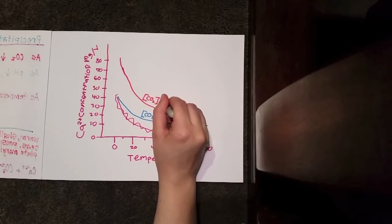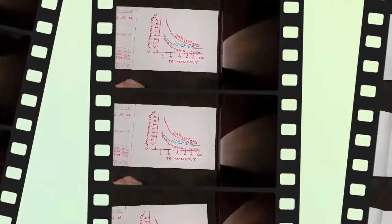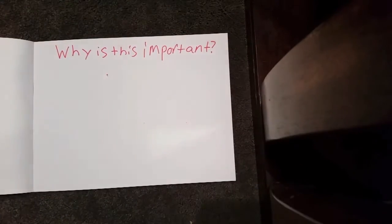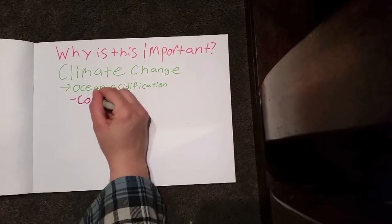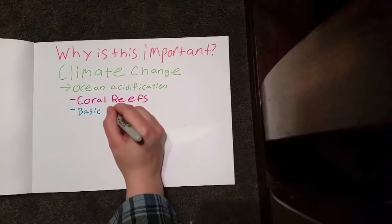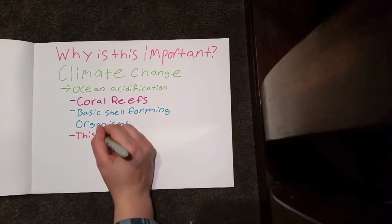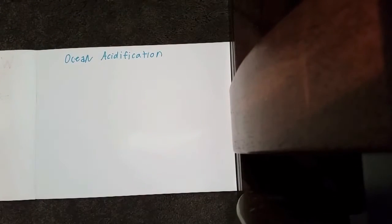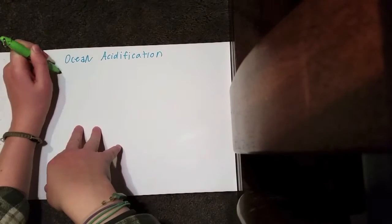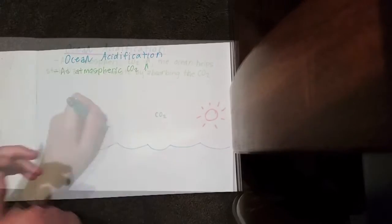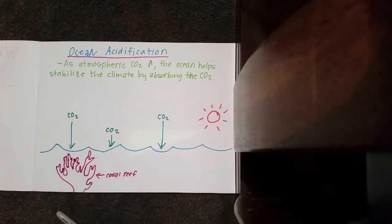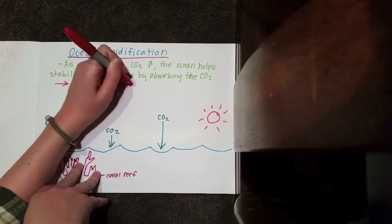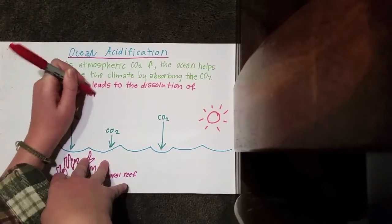Why is this important? The most important reason is because of climate change, which is currently happening today. Climate change leads to ocean acidification and negatively affects coral reefs, basic shell-forming organisms, as well as humans. Ocean acidification occurs when the carbon dioxide in the atmosphere increases and the ocean helps stabilize the climate by absorbing carbon dioxide. By absorbing this carbon dioxide, calcium ions become more soluble in the water. In this picture, you can see CO2 being added to the ocean affecting the coral reef.